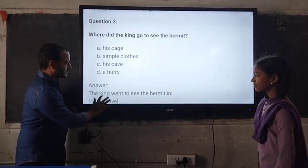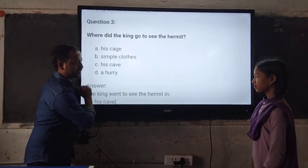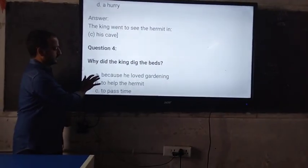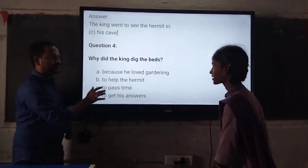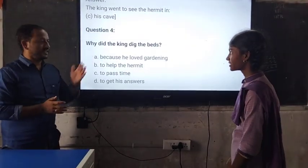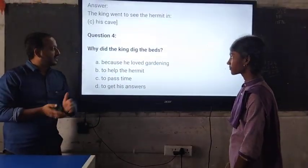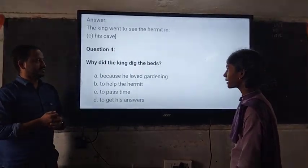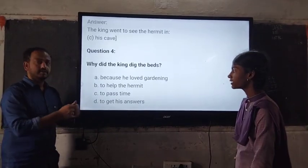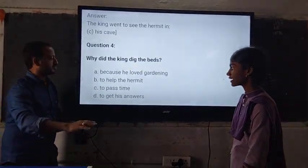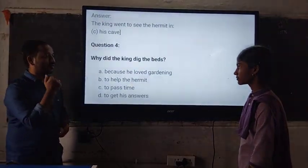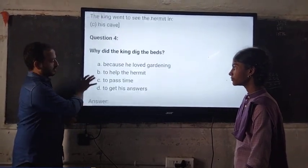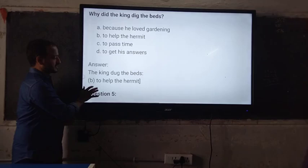Let's check the answer. Answer is: the king went to see the hermit. Wonderful. Next question goes to our student Rokitha. Question is: Why did the king dig the beds? A. Because he loved gardening. B. To help the hermit. C. To pass time. D. To get his answer. What is the right answer? B. To help the hermit. Wonderful, wonderful answer.